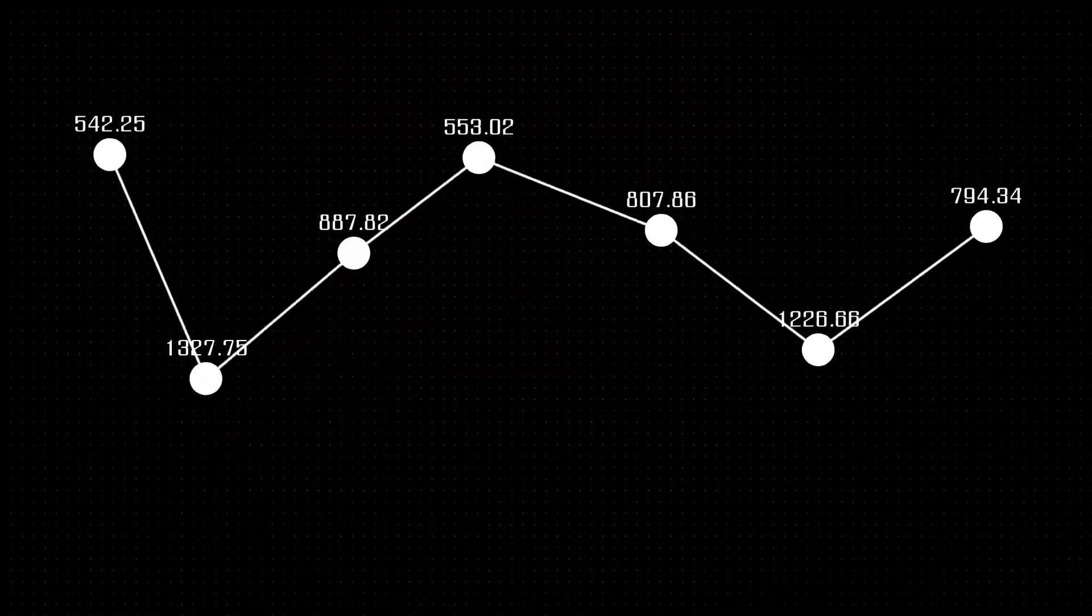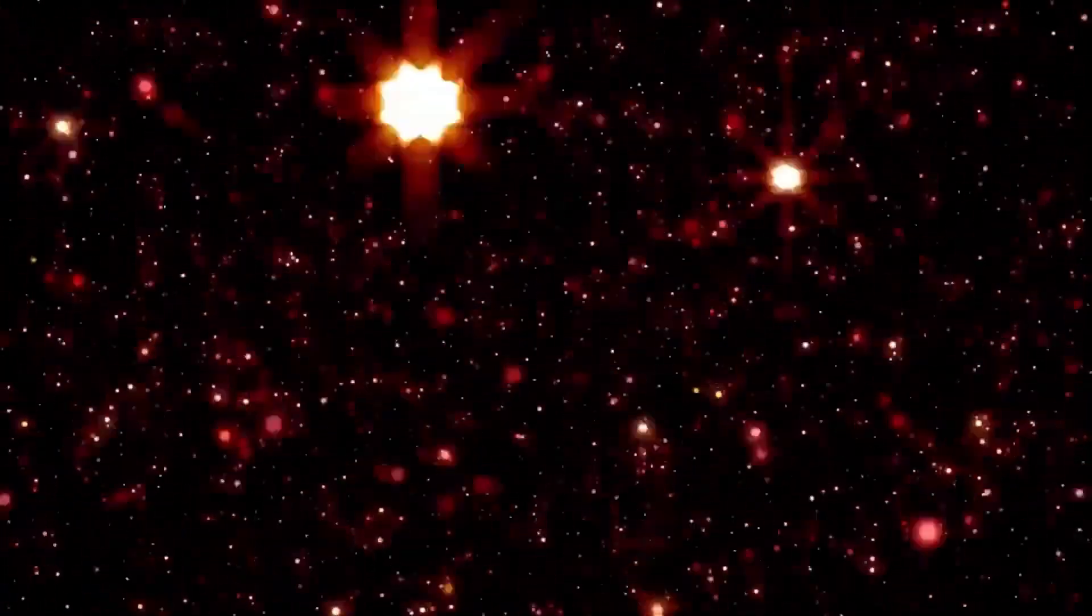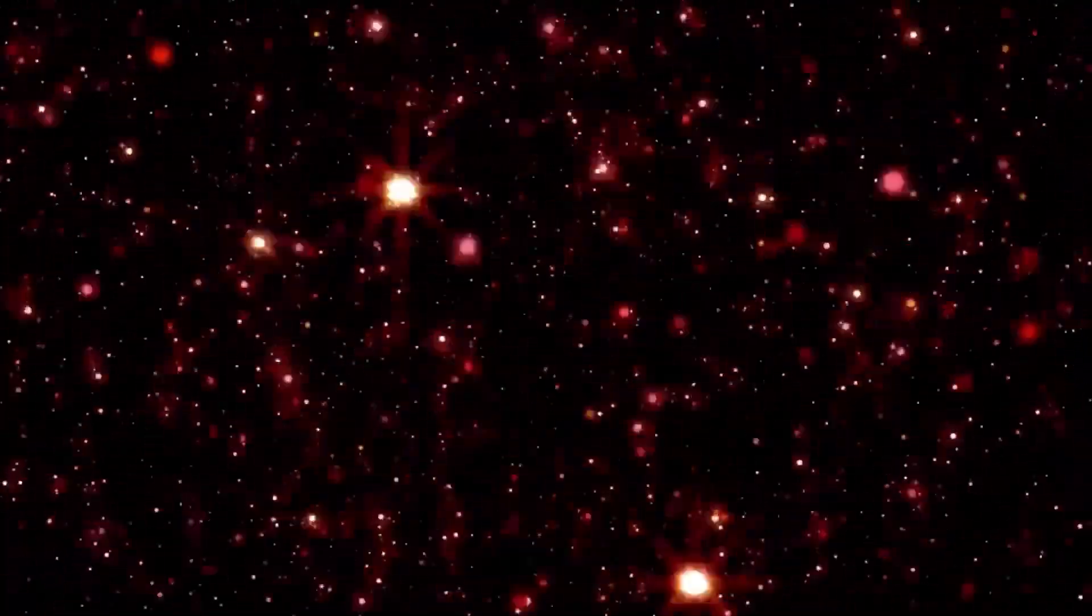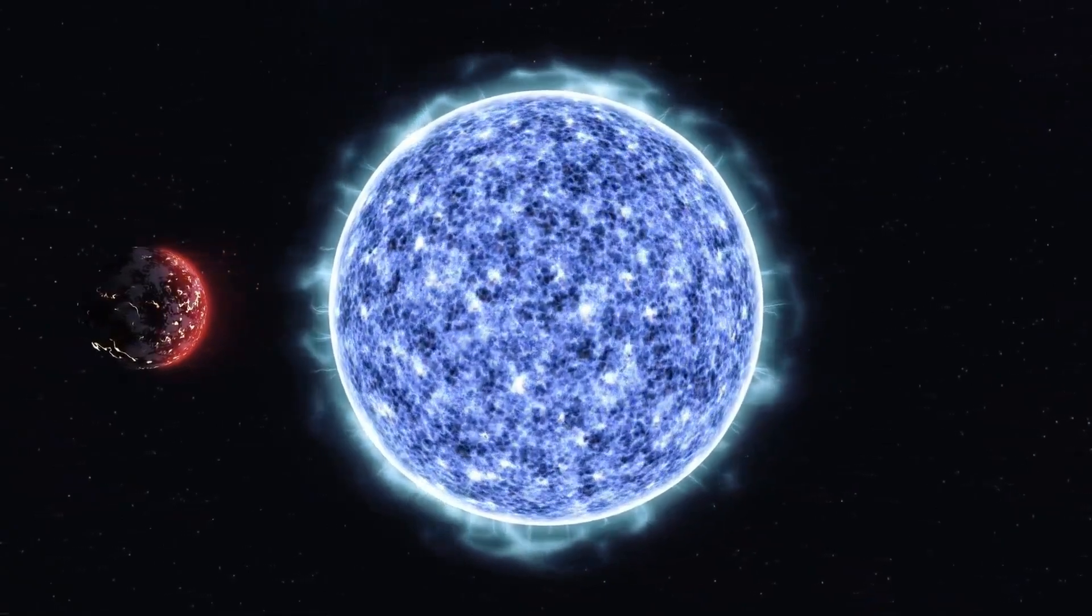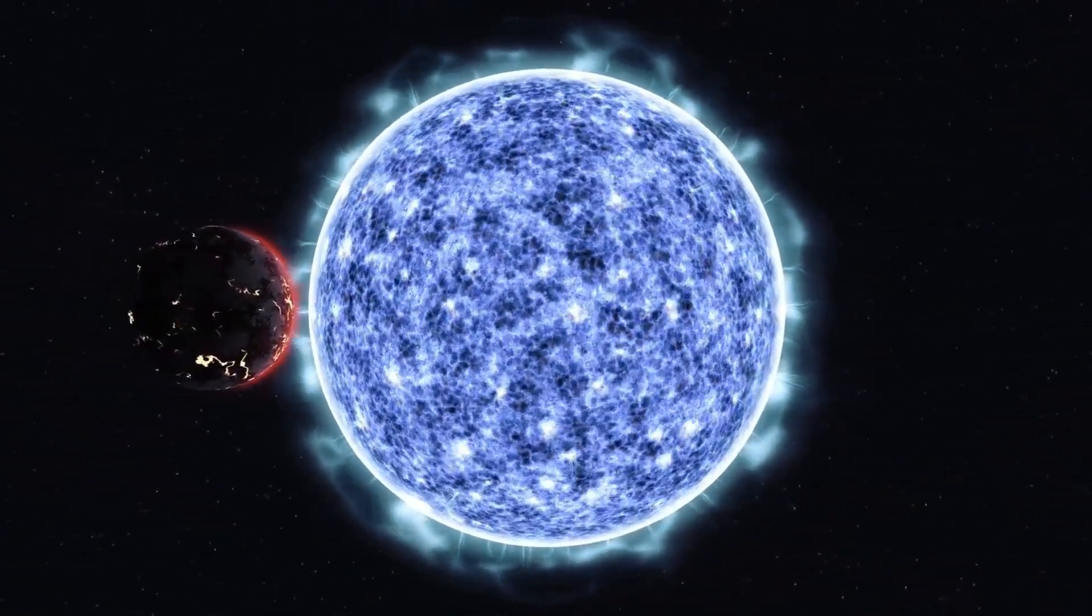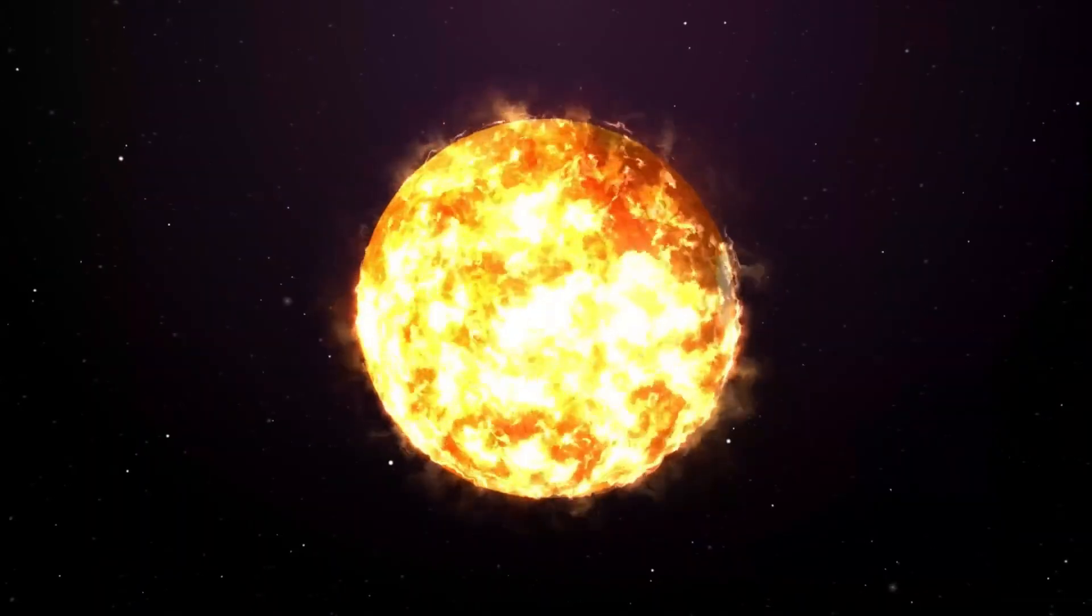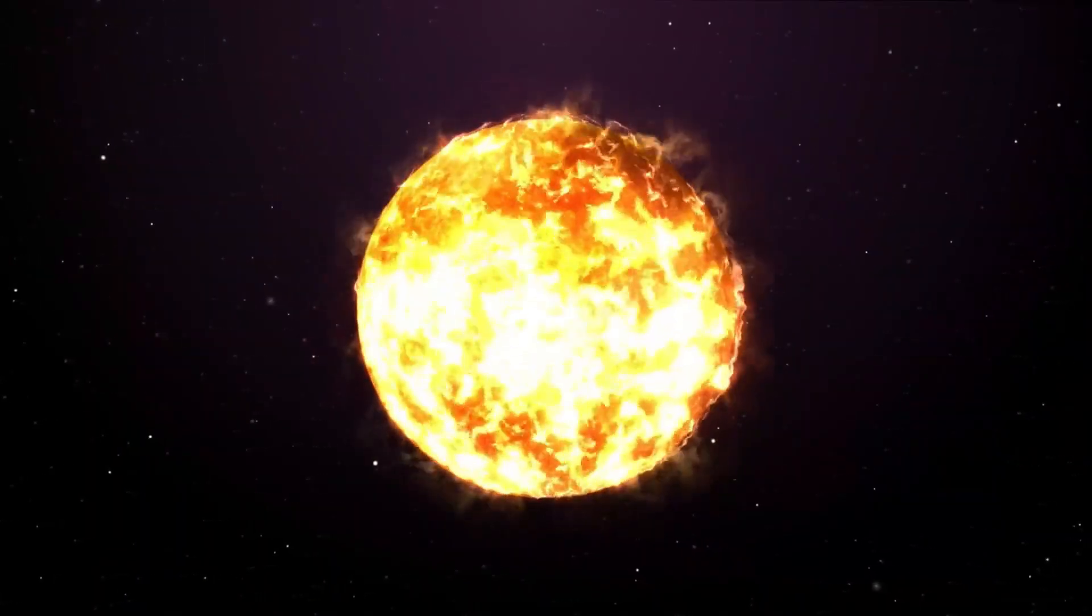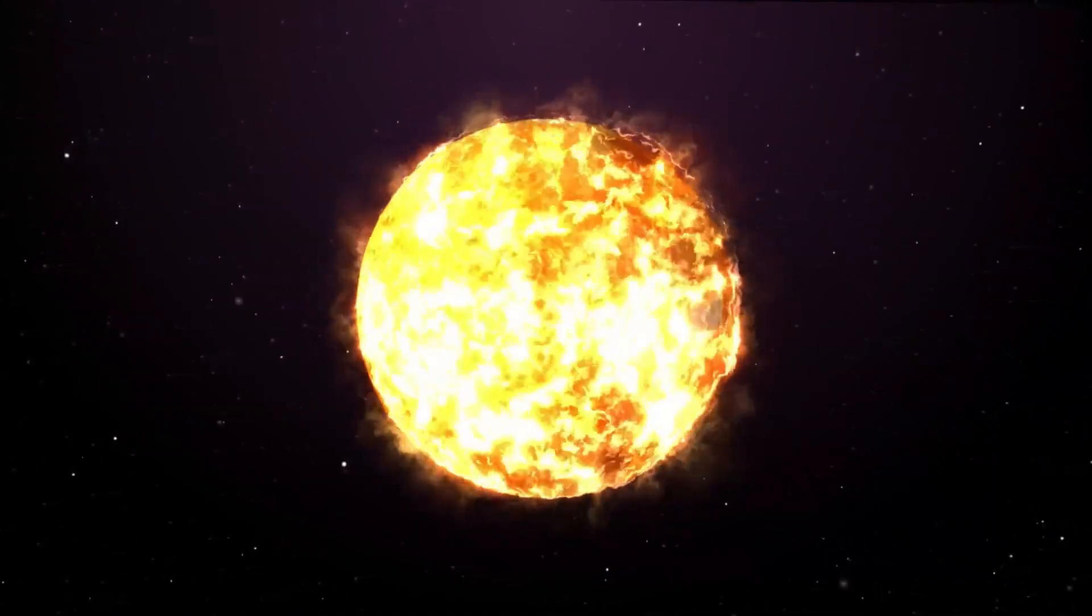The surprising thing is that Betelgeuse is not as unique as one might think. While there are not many stars like it, there are some that share certain similarities and are equally fascinating. One of Betelgeuse's cosmic cousins is Antares, a red supergiant located in the constellation Scorpius. Antares is also a variable star, meaning that it undergoes changes in brightness over time, just like Betelgeuse.